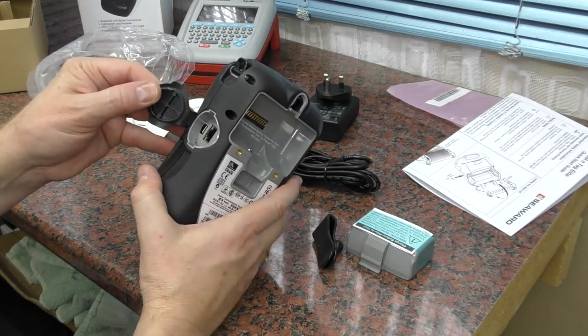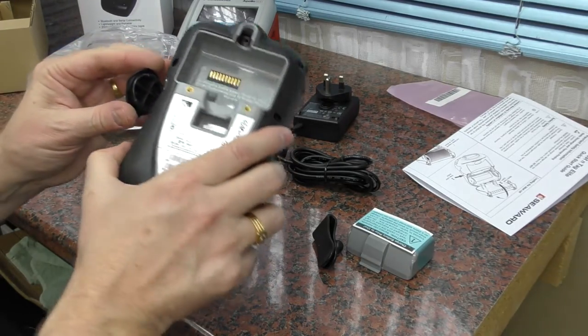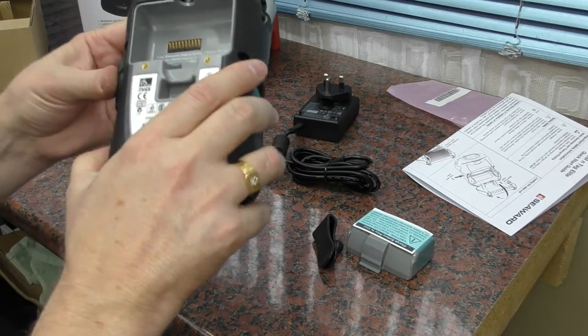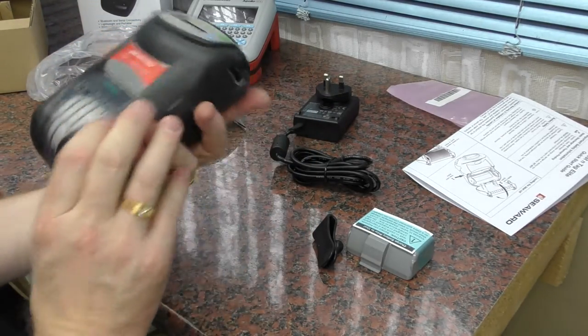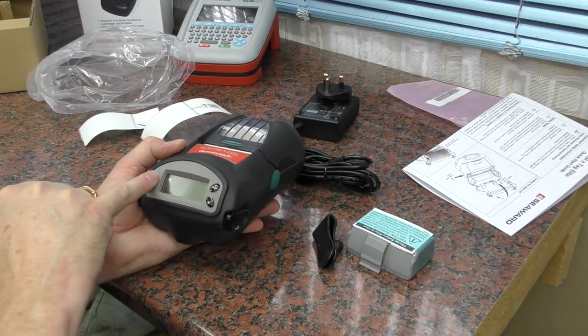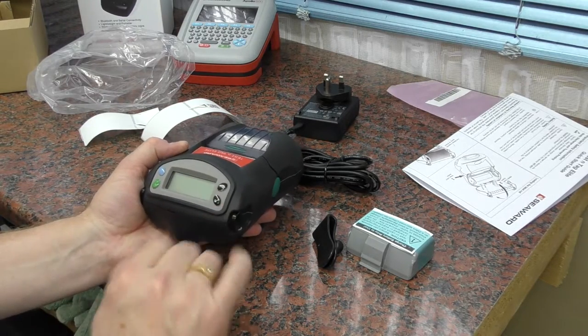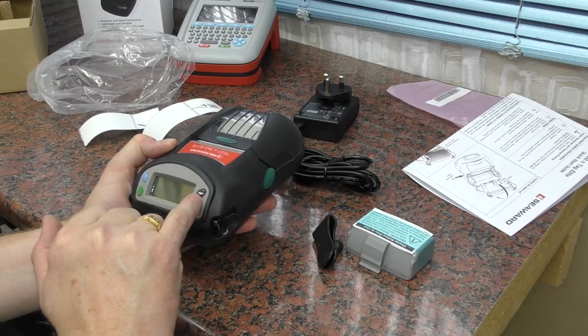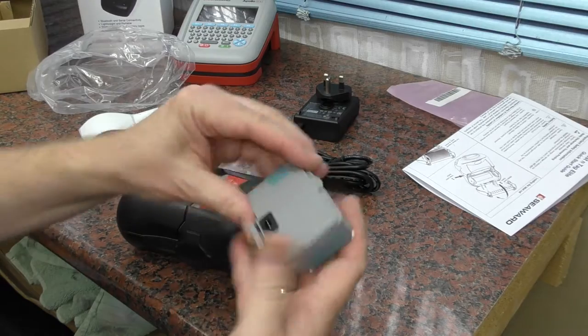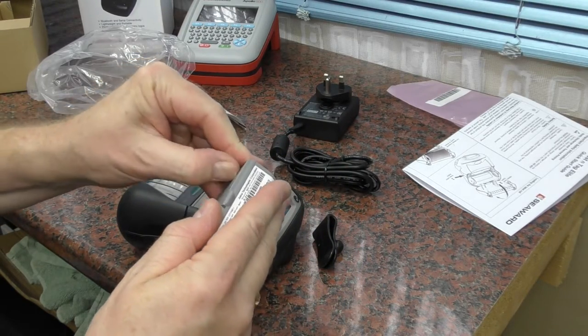USB and another port there. Again, covered by a rubber cover. And there is a screen. Blue looks like it feeds the paper. Green is on. Some ticks to select and there's an arrow pointing to the right. So I think we'd best just get that battery in and see if it's charged and it will power up or not.